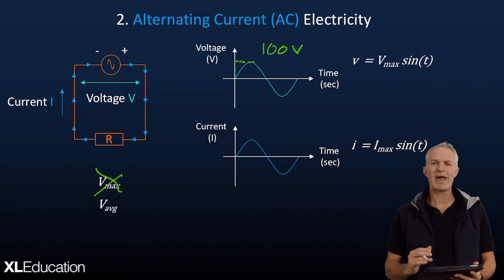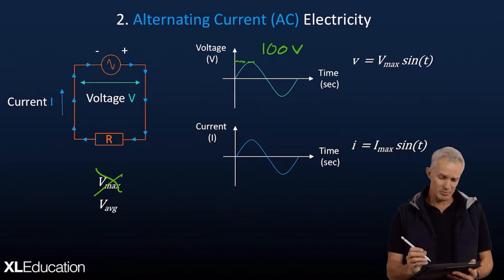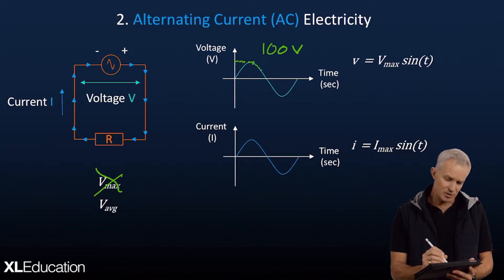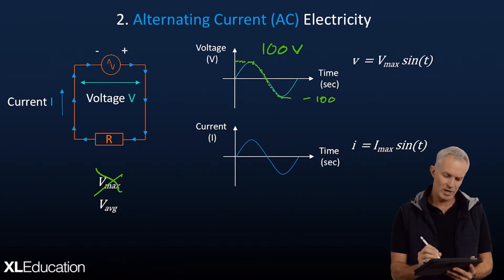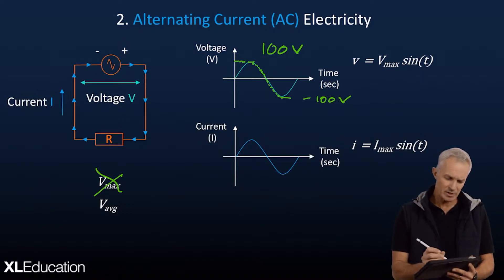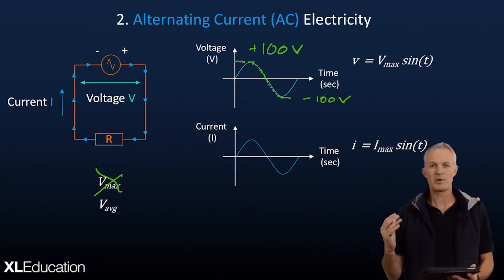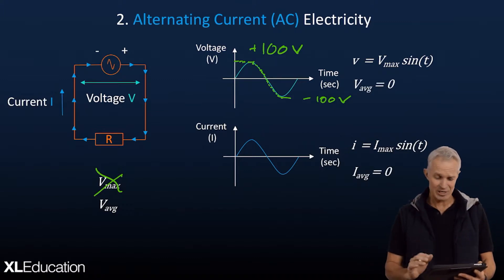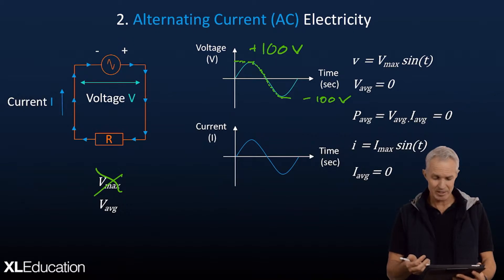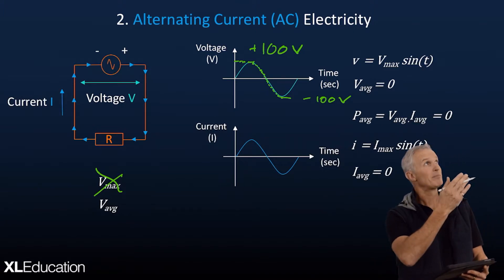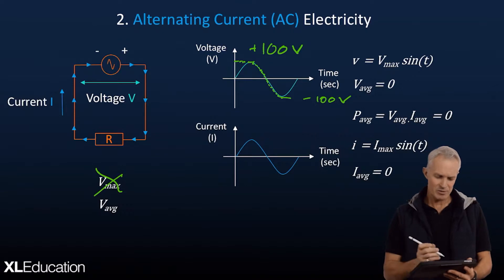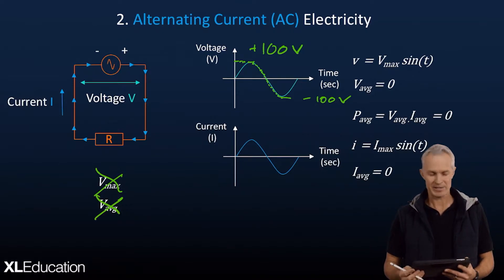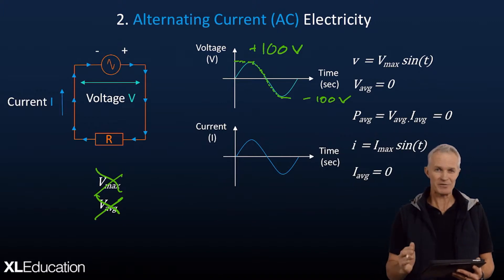What about the average voltage? This presents another problem: the voltage reached up to positive 100, came back down to zero, then went down to minus 100 volts — from plus 100 down to minus 100. The average of plus 100 and minus 100 is zero. That's really complicated because if we substituted that into the power equation, the power would be zero as well — and clearly there is power being delivered to that resistor, otherwise these light bulbs wouldn't come on when we turn on the switch. So average is also not a viable way to do the maths.